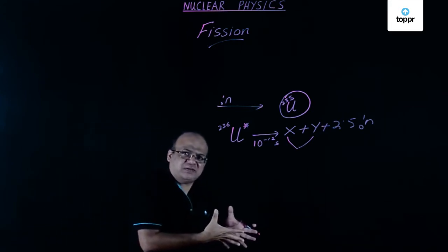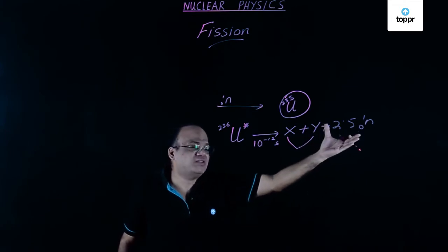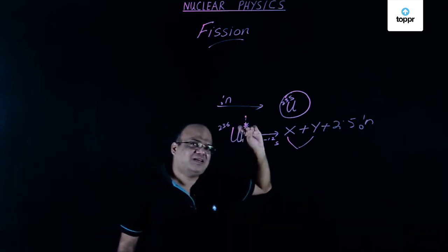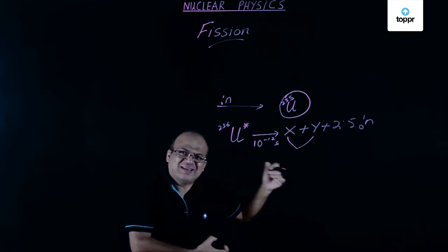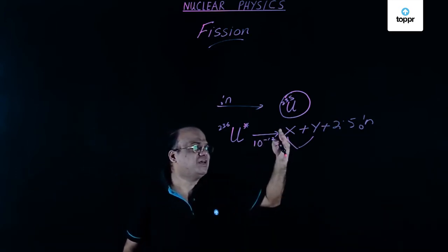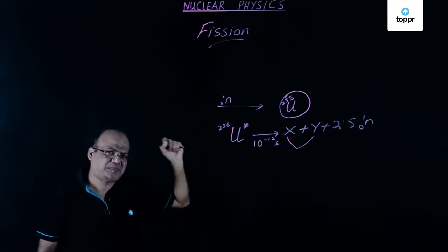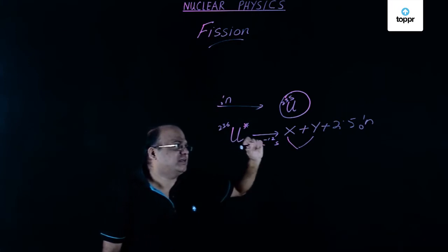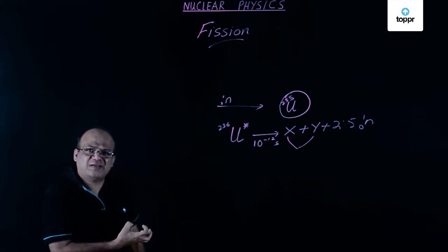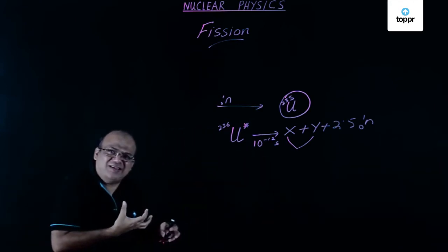So from where is this energy coming? This energy is coming because the total mass of the daughter nuclei, including the neutrons, is less than the mass of the parent nucleus. The difference in mass — that is called the mass defect — is released as energy. The energy is the energy equivalent to the mass defect. Mass defect is the mass of all the products minus the mass of the parent nucleus.